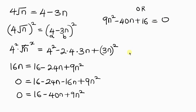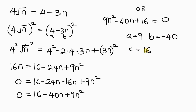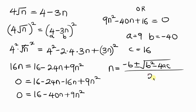We're going to use the quadratic formula. We need to identify: a is the coefficient of n squared, which is 9; b is the coefficient of n, which is negative 40; and c is the constant term, which is 16. Using the quadratic formula, n equals negative b plus or minus the square root of b squared minus 4ac, all over 2a.